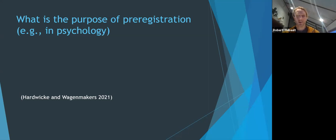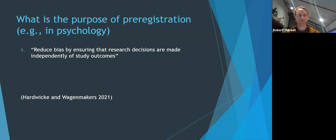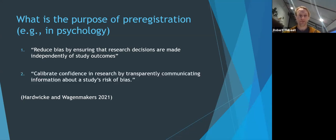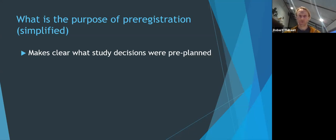In psychology, Hardwick and Wegenmakers wrote there's two reasons for using pre-registration. One is to reduce bias by ensuring that research decisions are made independently of study outcomes. And two is to calibrate confidence in research by transparently communicating information about a study's risk of bias. Number two here is saying that it's not necessarily making a study better, but it's allowing you to detect whether that study is biased or not. Again, a simplified version of this is just pre-registration makes clear what study's decisions were pre-planned.